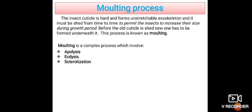The insect cuticle is hard and forms an unstretchable exoskeleton, and it must be shed from time to time to permit the insects to increase their size during growth period. Before the old cuticle is shed, a new one has to be formed underneath it. This process is known as moulting.